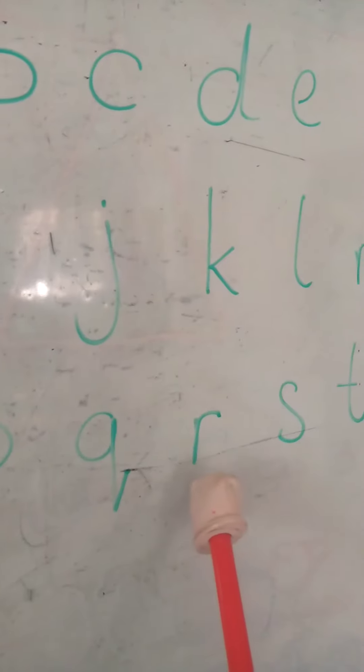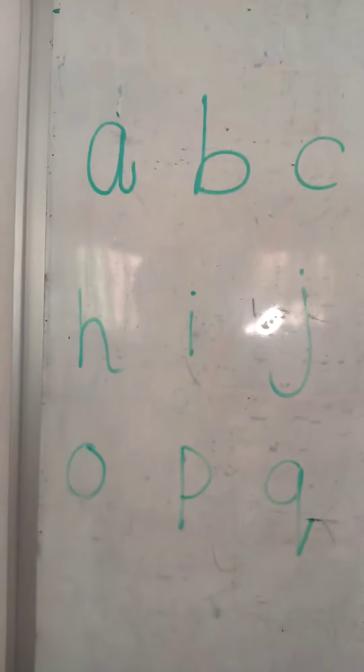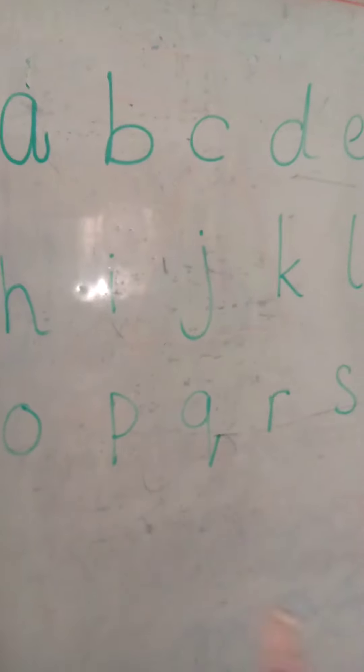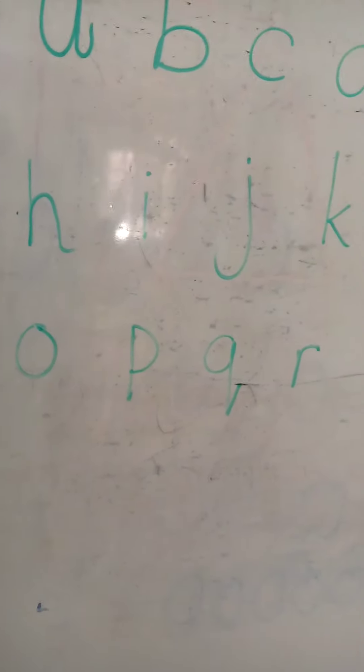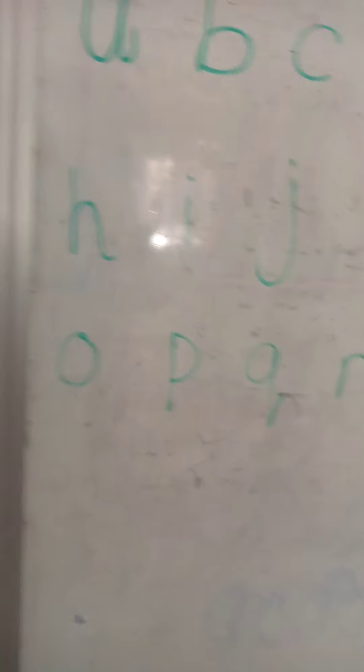Q, R, S, T. This is the sound that these letters make, letter A to T. So you're going to listen to it, try to follow it, and say the sounds from A to T. Is that okay? Bye.